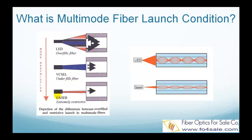When FP and DFP single-mode lasers are used on multi-mode fiber, this situation is even worse, essentially exciting only a few modes at the center of the core. This is called an extremely restrictive launch, as shown in the third picture.